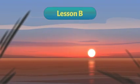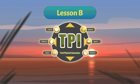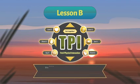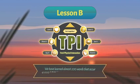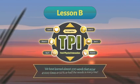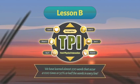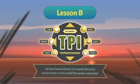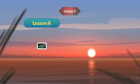Along with extremely simple grammar using TPI, in our BB sessions — like 1b, 2b, 3b — we have learned alhamdulillah almost 200 words that occur 41,000 times, covering approximately 50 percent — half the words in every line of the Quran. So make sure to review the course so that you are ready for starting Quran Course 1.